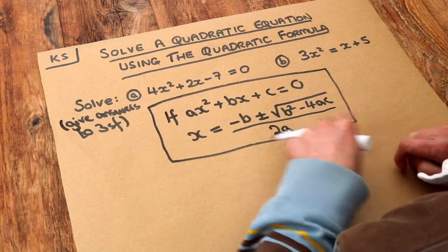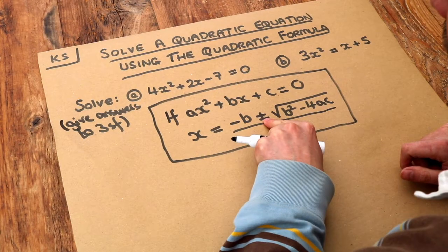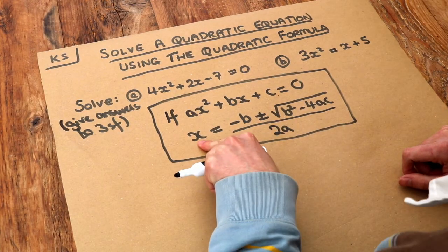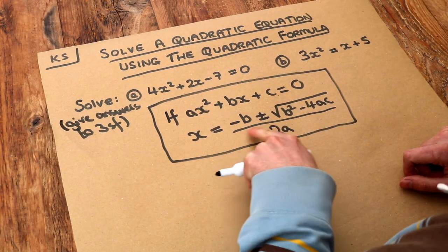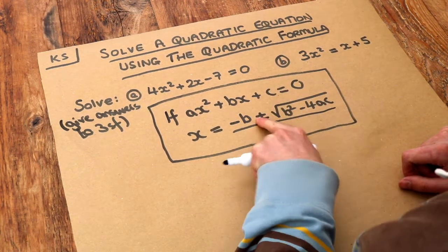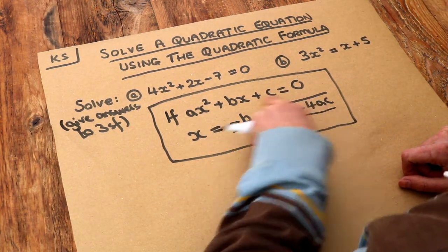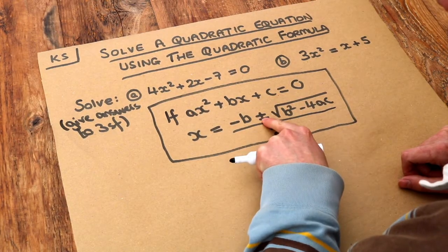One thing to draw your attention to is this plus or minus symbol, and that just means we actually get two different values of x. We get one value of x if we do this expression but use a plus, and we get another value of x if we use this expression but use minus instead.